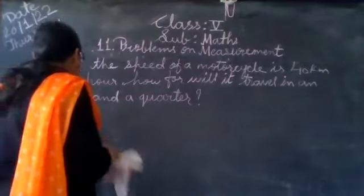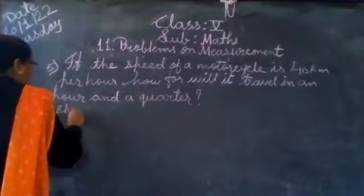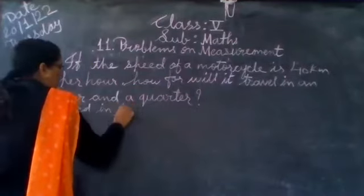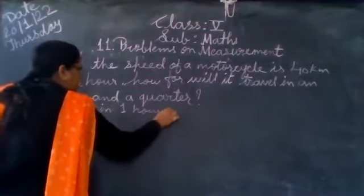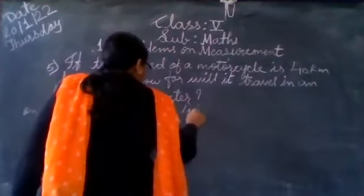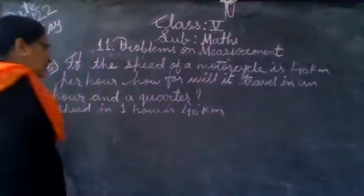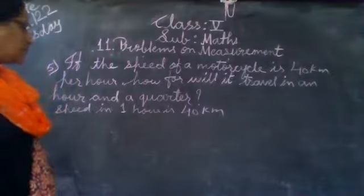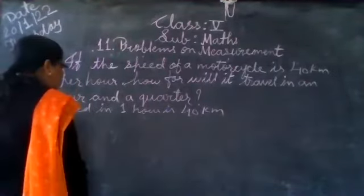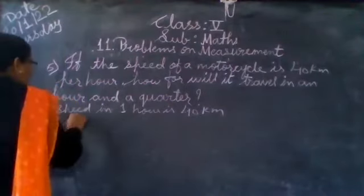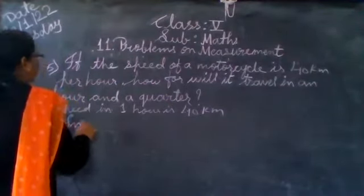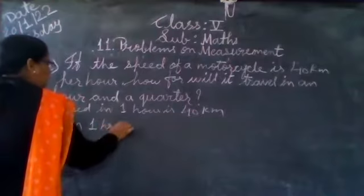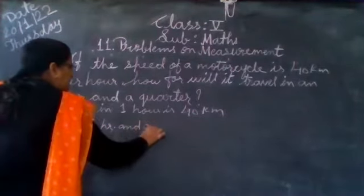So in 1 hour, the speed is 40 km per hour. Speed in 1 hour covers a distance of 40 km. We need to find the distance covered in 1 hour and a quarter.